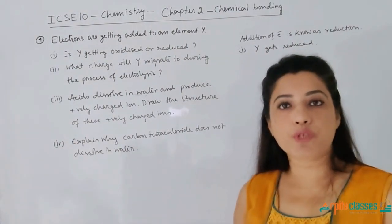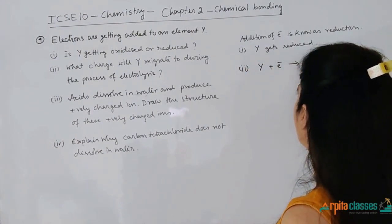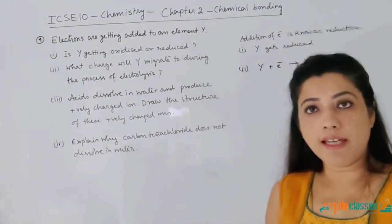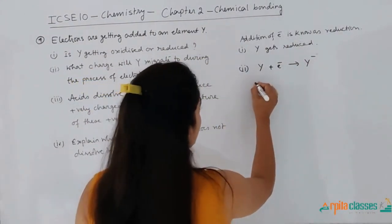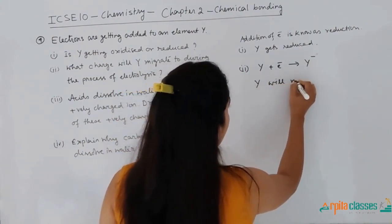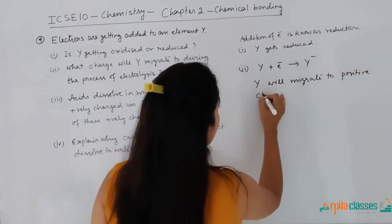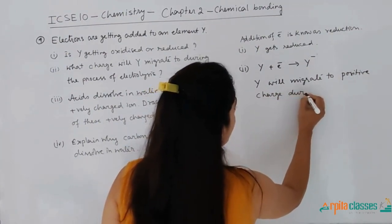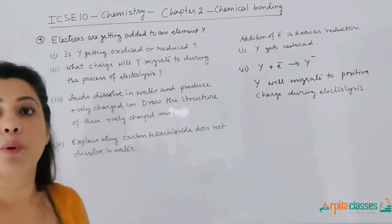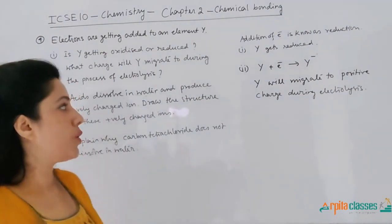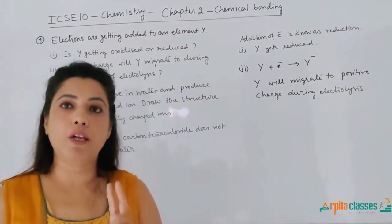What charge will Y migrate to during electrolysis? If electrons are getting added to Y, Y will contain a negative charge. A negatively charged ion will migrate towards the positively charged electrode, which is called the anode. So Y will migrate to the positive charge electrode.